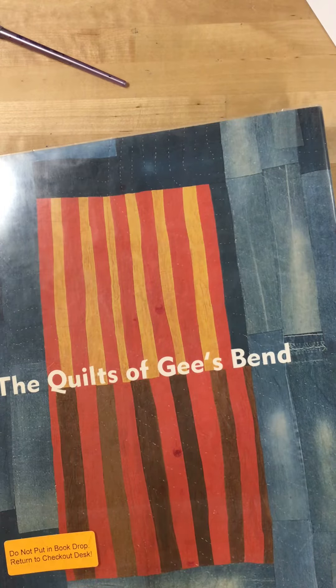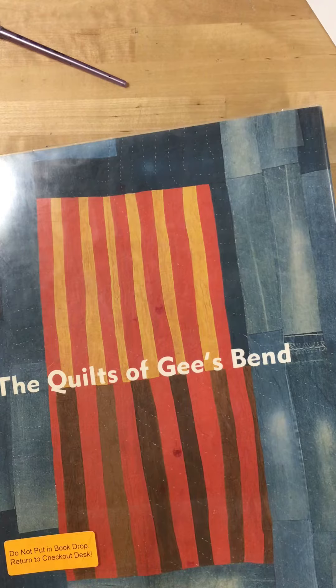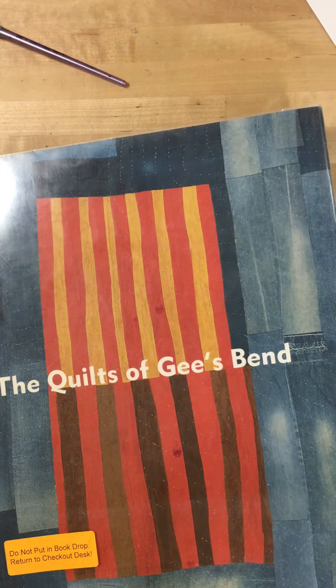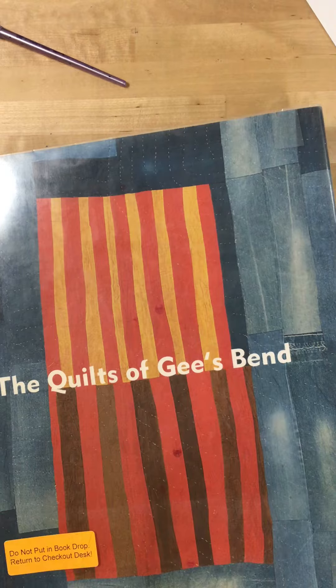It was made by Annie Mae Young of G's Bend. Please take a moment to look at the link on the assignment so that you can find a quilt you want to base your drawing on, because we are going to be drawing quilts today.